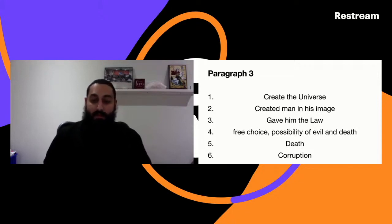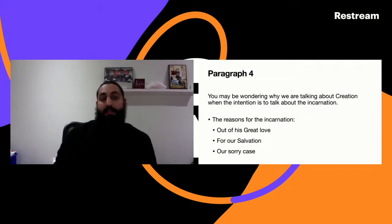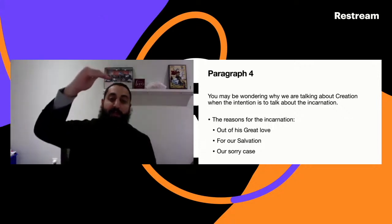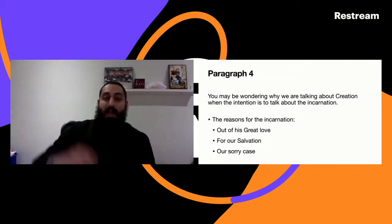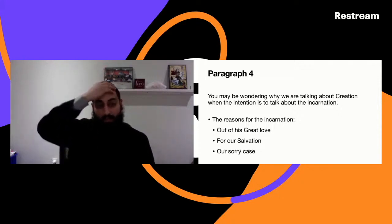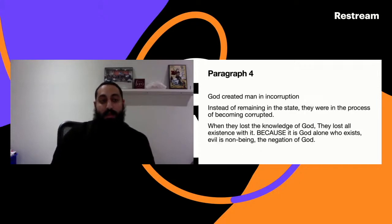Death now we know comes about, and this brings about corruption. In paragraph four he says you may be wondering why we are talking about creation when the intention is to talk about the incarnation. Simply, we are starting from creation because it is linked, and the reason for the incarnation happened all the way in the creation of Adam and Eve. There has been a link to save it ever since. The reasons for the incarnation: out of His great love, for our salvation, and our sorry case.